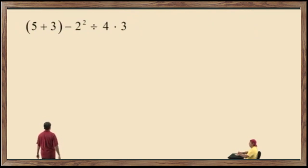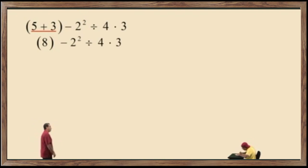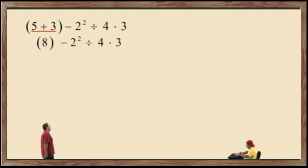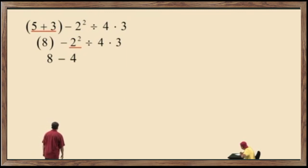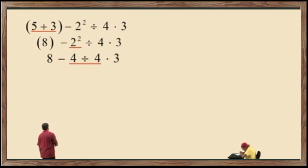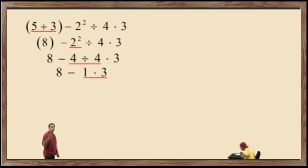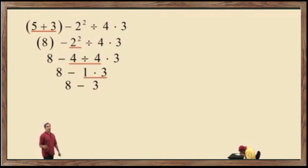Here's a problem. Notice we have parentheses, so we do that first: 5 plus 3 is 8. Bring down our work. We don't require those parentheses around the positive 8. Next, exponents: 2 squared is 2 times 2, which is 4. Bring down the work. We have division and multiplication — division comes first, so 4 divided by 4 is 1. Bring down our work. We have subtraction and multiplication — multiplication must be done before subtraction: 1 times 3 is 3. Bring down the work. 8 subtract 3 is 5. That is our final answer.